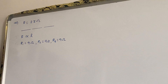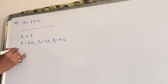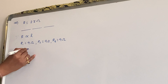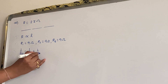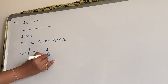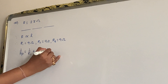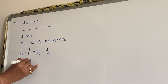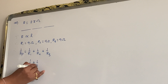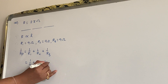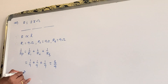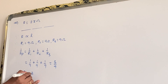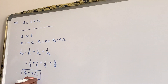They are connected in parallel. So we write: 1/Rp = 1/R1 + 1/R2 + 1/R3 = 1/9 + 1/9 + 1/9 = 3/9. So Rp = 9/3 = 3 ohm. That is the answer for question 14.